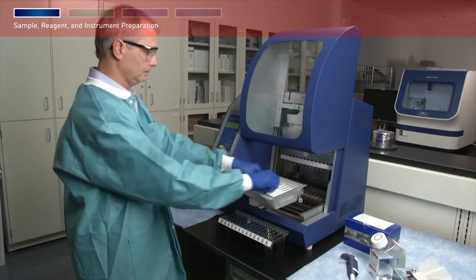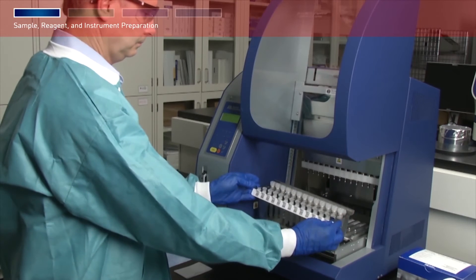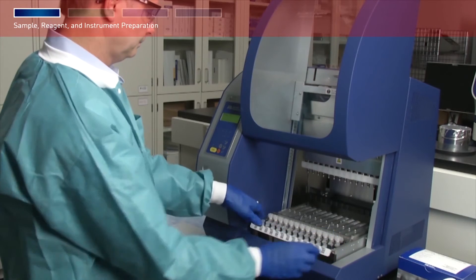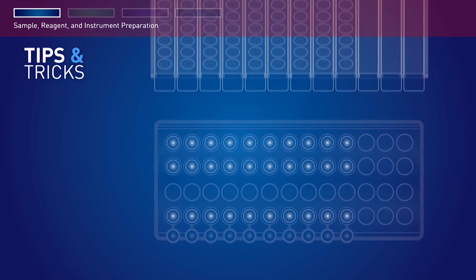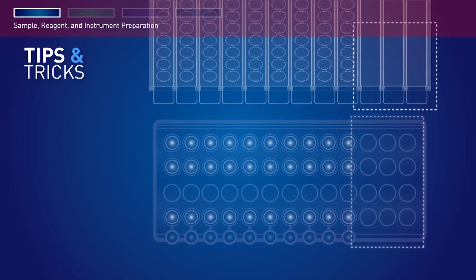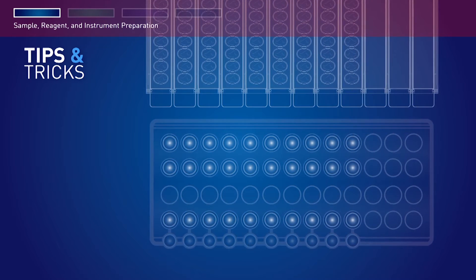Load the cartridge rack into the instrument first, followed by the tip and tube rack. Changing the order of loading the racks may cause the instrument to stop during a run operation. If you are processing fewer than 13 samples, make sure to load the tips and tubes in the same positions as the reagent cartridges that are loaded in the cartridge rack.